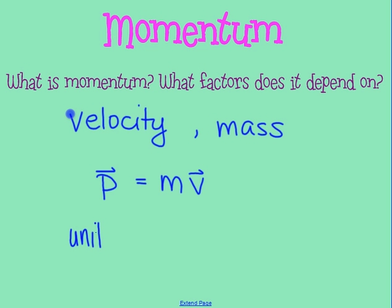Looking at units: the standard unit for mass is kilograms, and for velocity it's meters per second. Therefore, the units for momentum are kilogram meters per second. You might expect a special name like newtons or joules, but in physics we don't have another name for kilogram meters per second — that's just what it is.